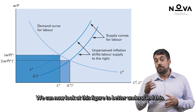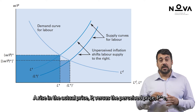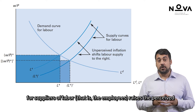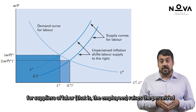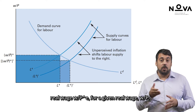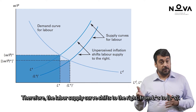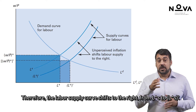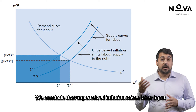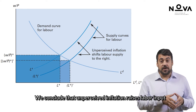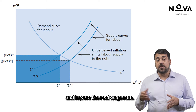We can now look at this figure to better understand this. A rise in the actual price P versus the perceived price PE for suppliers of labour — that is the employees — raises the perceived real wage W over PE, for a given real wage W over P. Therefore, the labour supply curve shifts to the right, from LS to LS'. We conclude that unperceived inflation raises labour input and lowers the real wage rate.